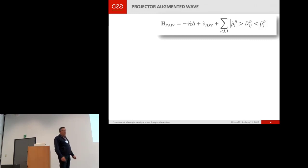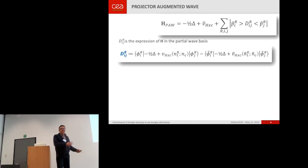So you have to take into account the non-orthogonality of pseudo-function. You have to use a compensation charge density. Your non-local operator is self-consistent, and you have these additional on-site contributions.